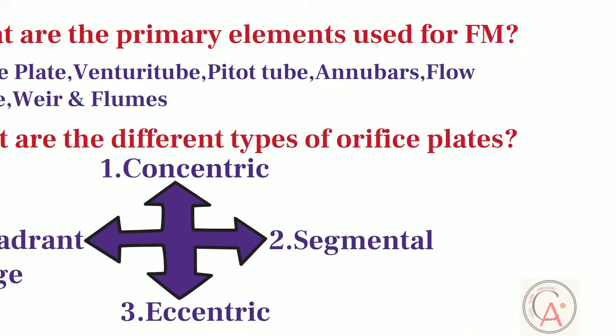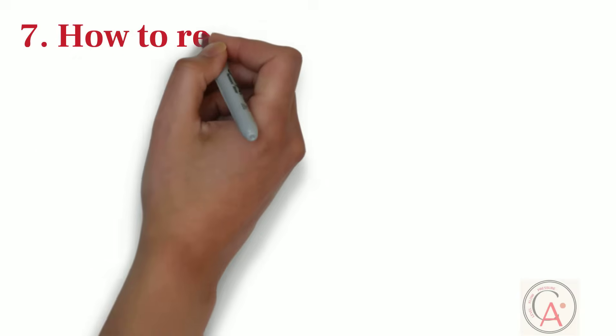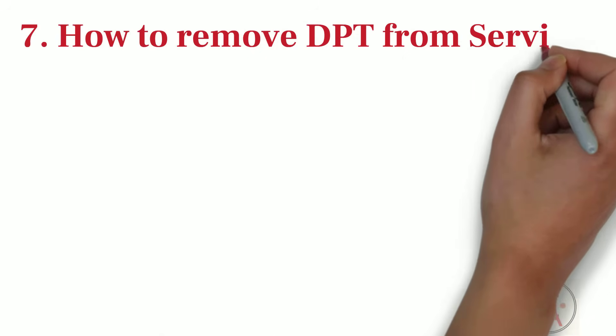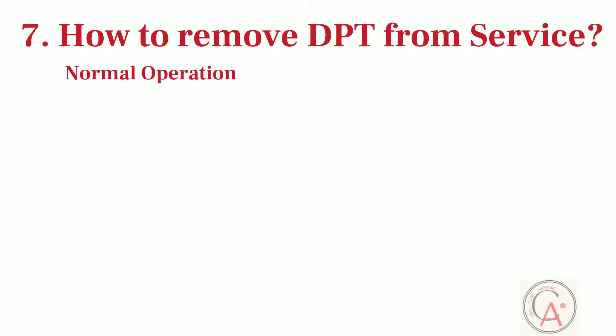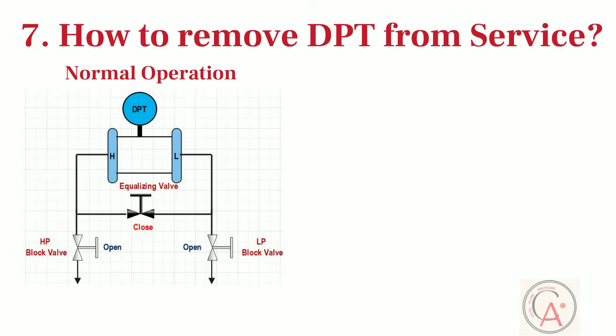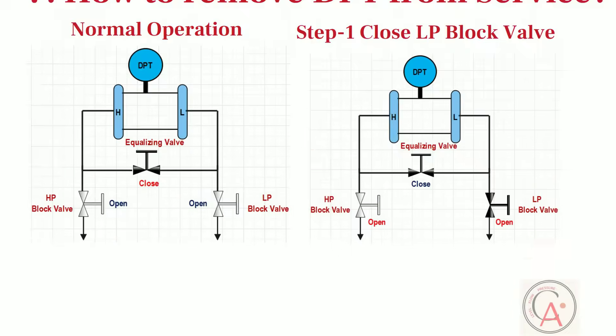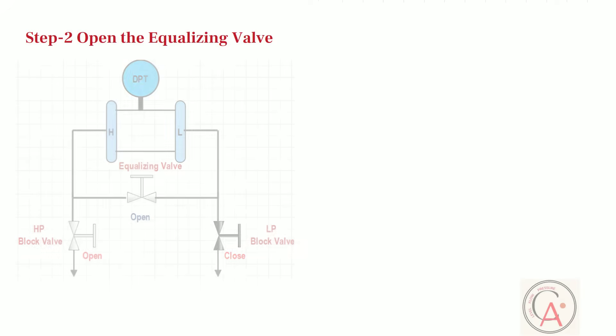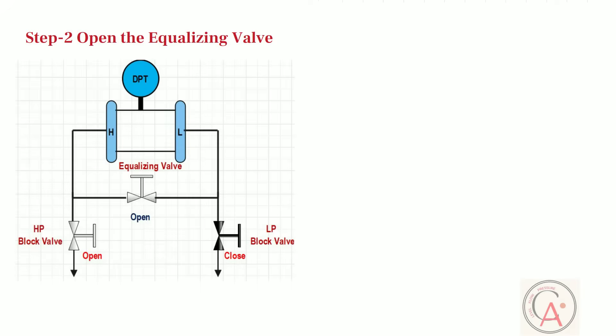Seventh and most important type of technical interview question is, how to remove differential pressure transmitter from service. In normal operation, both high side and low side manifold valve is in open condition, and equalizing valve is in close condition. To remove DPT from service, close the low pressure side block valve. Then open the equalizing valve. At the end, close the high pressure side block valve.